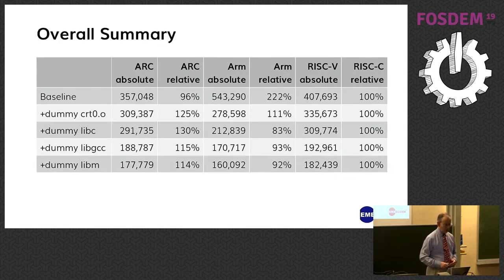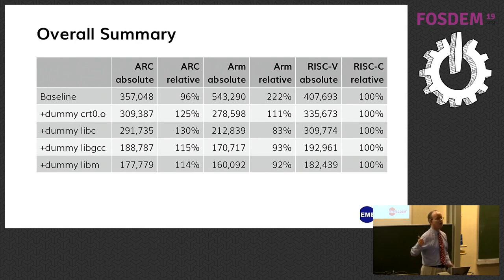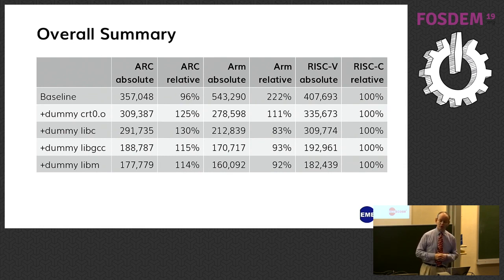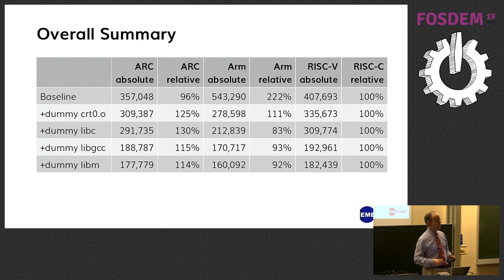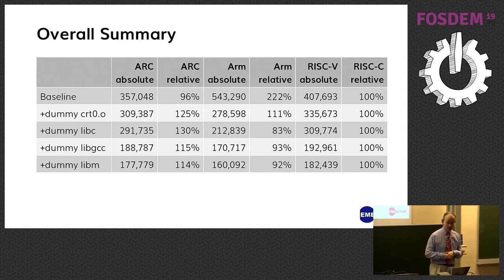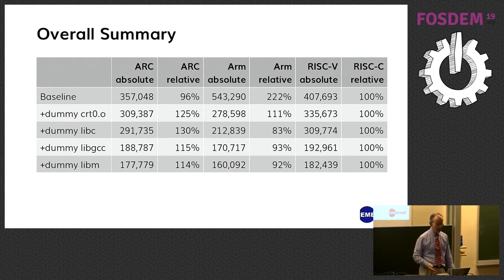Looking at the overall summary: at the top we have the baseline where we just compiled the programs. As we go through the lines, we've stripped out the distortion of pre-compiled startup code, C libraries of different quality, the emulation library, and the pre-compiled math library. If you take all of those out — the bottom line — you're really only looking at the size of the code you actually compiled. For the compiler writer, that's the one that gives you insight. With RISC-V at 100%, ARM comes in about 8% better, and ARC about 14% better.